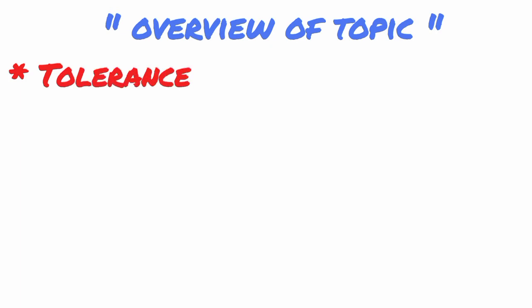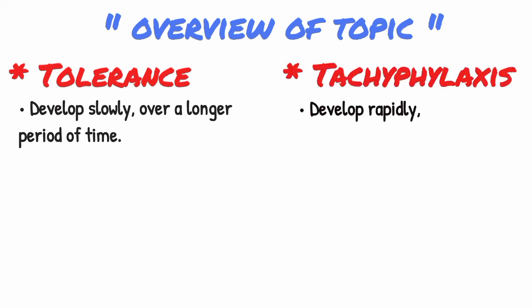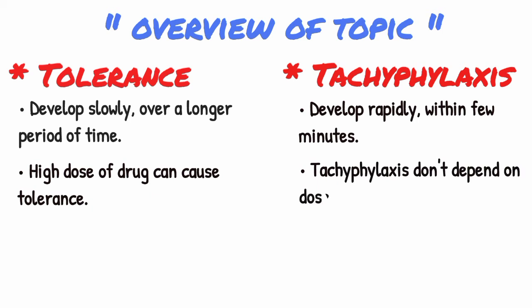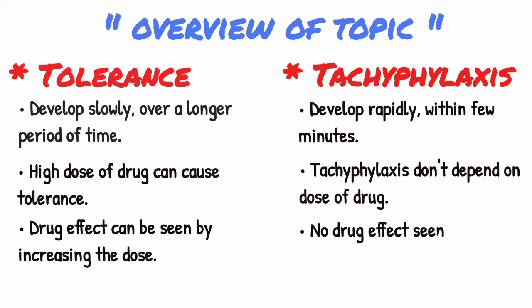Tolerance develops slowly over a longer period of time, from days to months, while tachyphylaxis develops rapidly within a few minutes. High dose of drug can cause tolerance, while tachyphylaxis doesn't depend on dose of drug. In tolerance, drug effect can be seen by increasing the dose, while in tachyphylaxis, no drug effect is seen even after increasing the dose of drug.